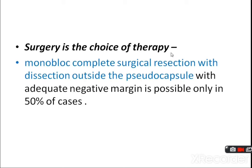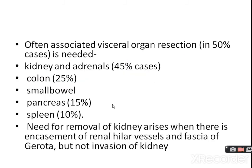Surgery is the choice of therapy. Monoblock complete surgical resection with dissection outside the pseudo-capsule with adequate negative margins is possible only in 50% of cases. Surgery is often associated with visceral organ resection, including kidney and adrenal, colon, small bowel, pancreas, and spleen.